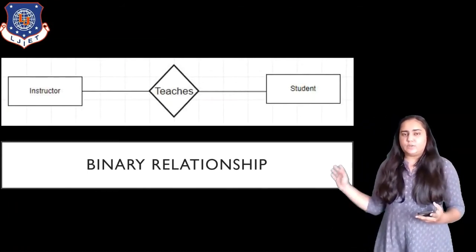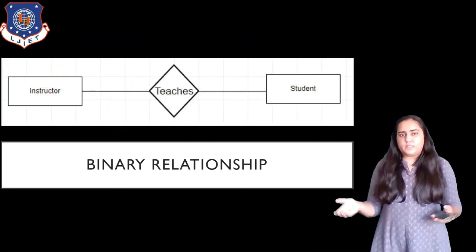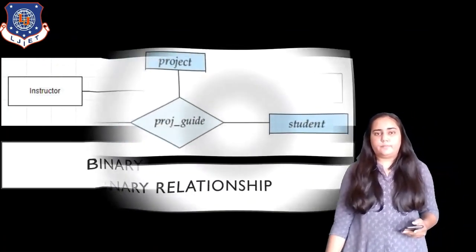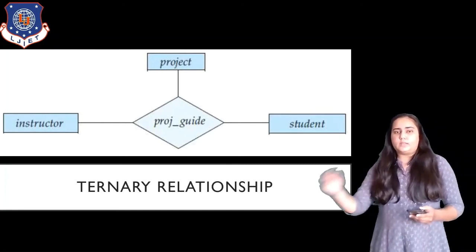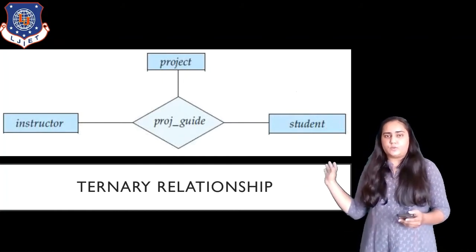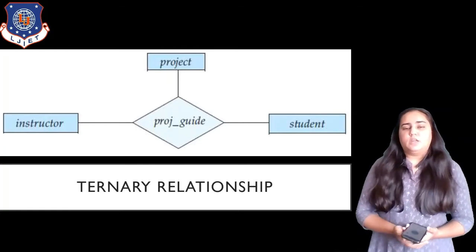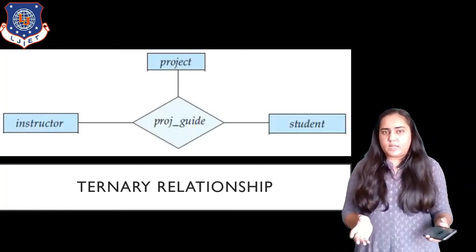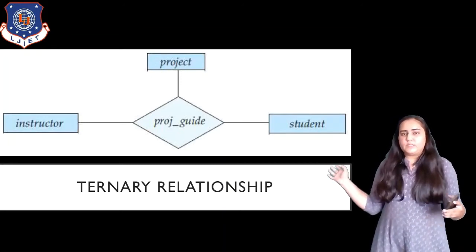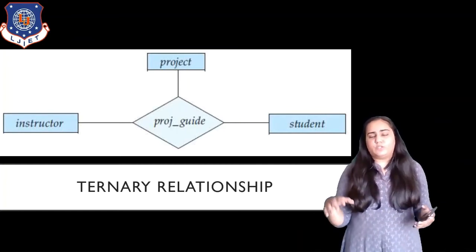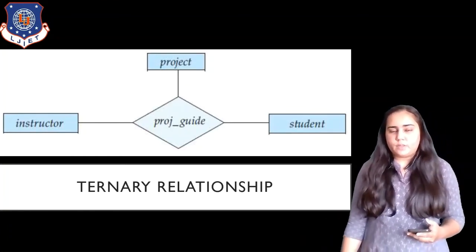Next, we have a binary relationship — a fairly simple relationship between instructor and student, where the instructor teaches the student. Both instructor and student are entity sets, and 'teaches' is the relationship set. There can also be a ternary relationship, involving instructor, student, and project. The relationship between them is called project_guide. You don't always need a name — you can combine entity names to form a relationship name. A ternary relationship has three entity sets: one student is working on one project, and one instructor is guiding both that student and that project.